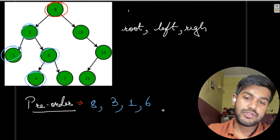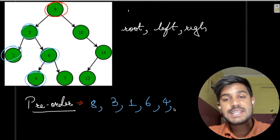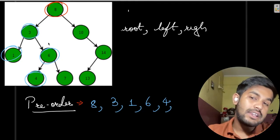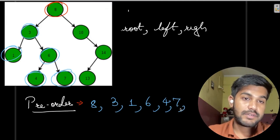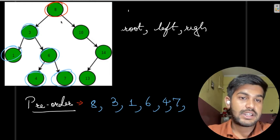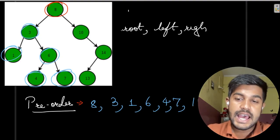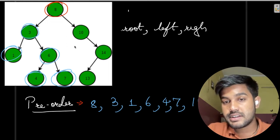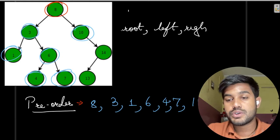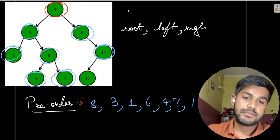Now 4 acts as a root and 4 does not have any left or right. So 6's left is done, so we do the right — that is 7. Now 8's left side is done. Now comes the right side: so we have 10. Now 10 acts as the root. 10's left is not present, only right is present. After 10's left is done, right is to be done. So 14 is to be done. Now 14 acts as a root, so root's left is to be done — that is 13.